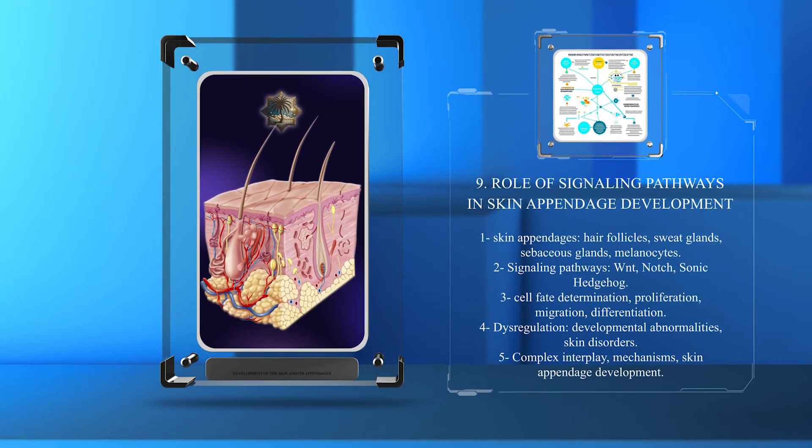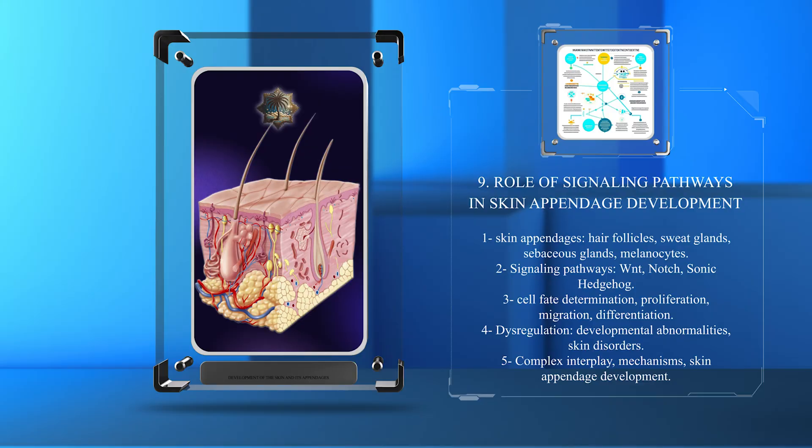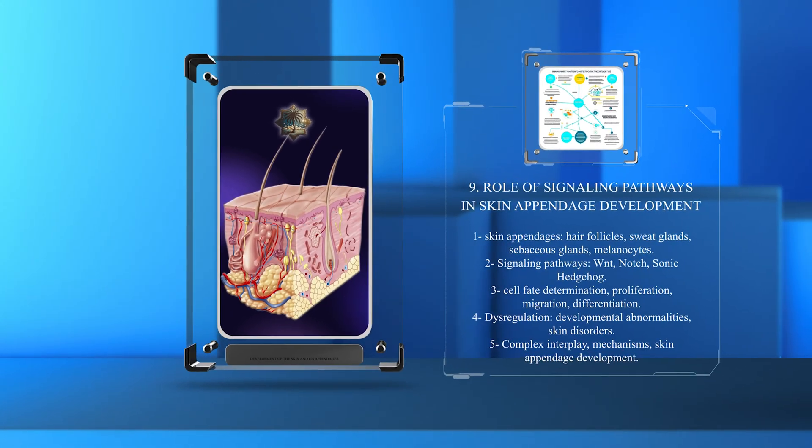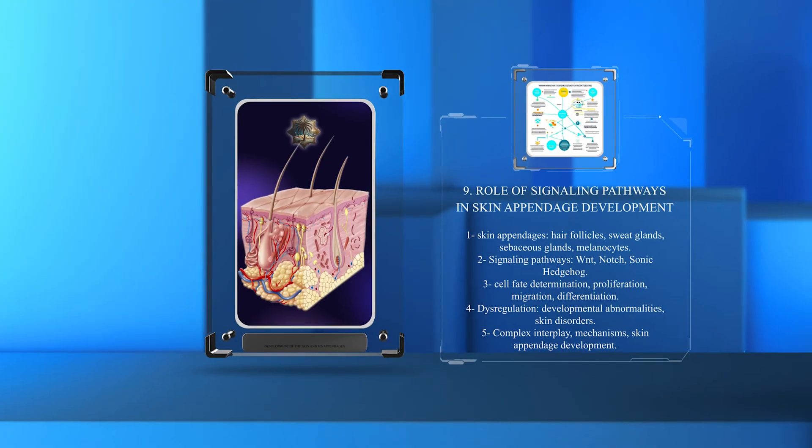These pathways, such as WNT, Notch, and Sonic Hedgehog, play important roles in cell fate determination, proliferation, migration, and differentiation.